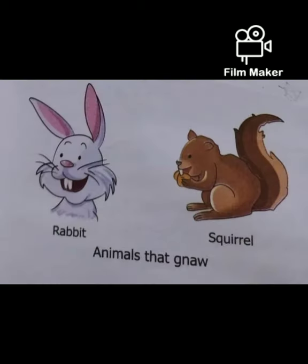Now we will learn about animals that gnaw. Look at this picture - rabbit and squirrel. This comes under animals that gnaw. Gnaw means kutarna. These both animals have sharp front teeth to bite into hard seeds, nuts and fruits. They eat their food by taking repeatedly small bites into it. This way of eating food is called gnawing.